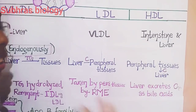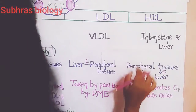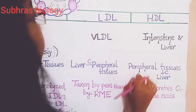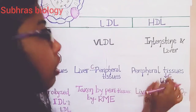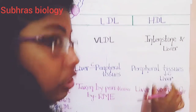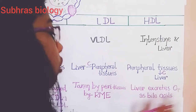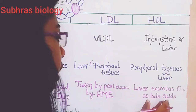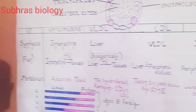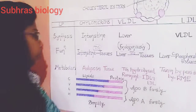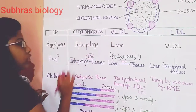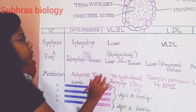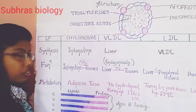From where does the liver get cholesterol? As the function of HDL is to transport cholesterol from peripheral tissues to the liver. The liver excretes cholesterol as bile acids, or it can be used for the formation of steroid hormones. These are all about the structure, synthesis, function, and metabolism of the lipoproteins — in short.